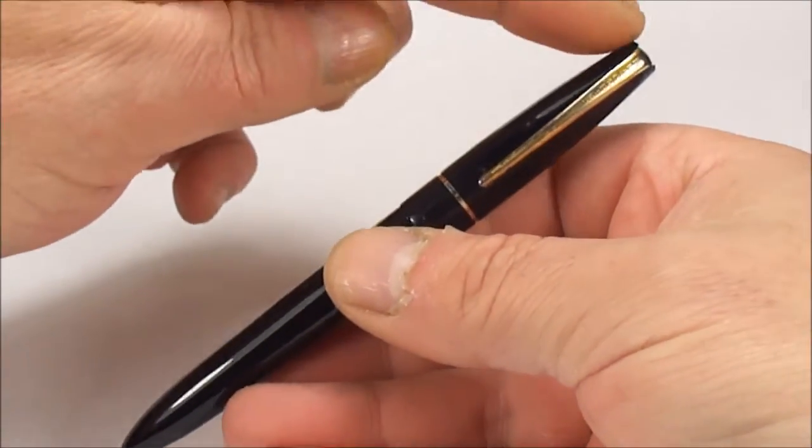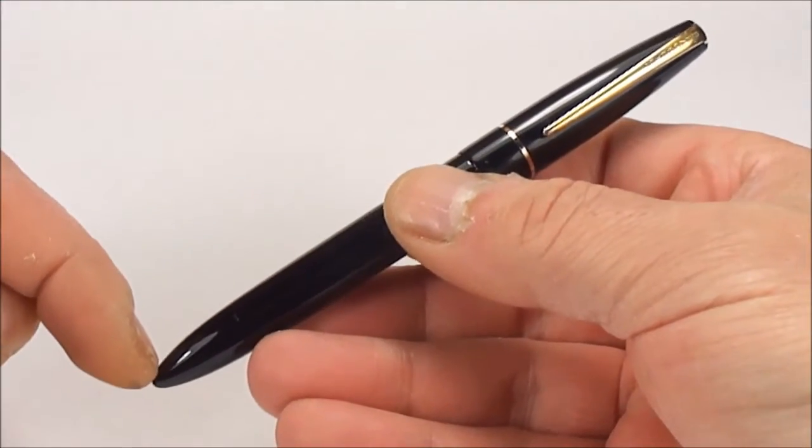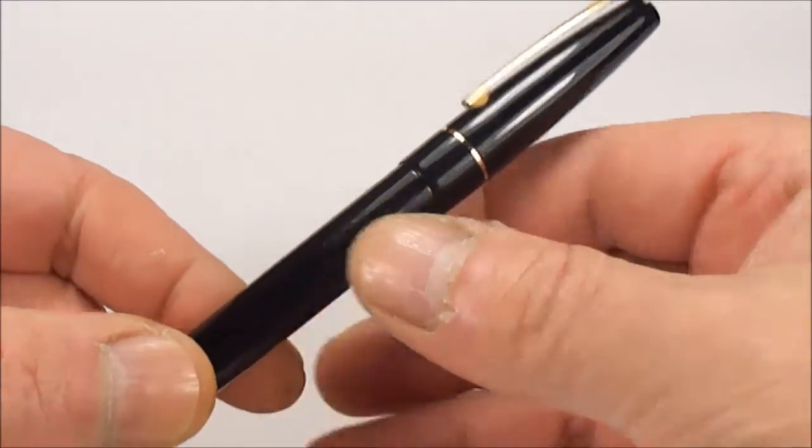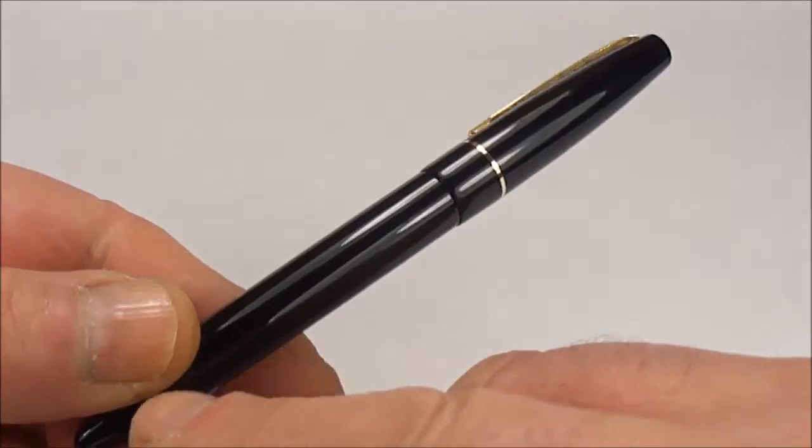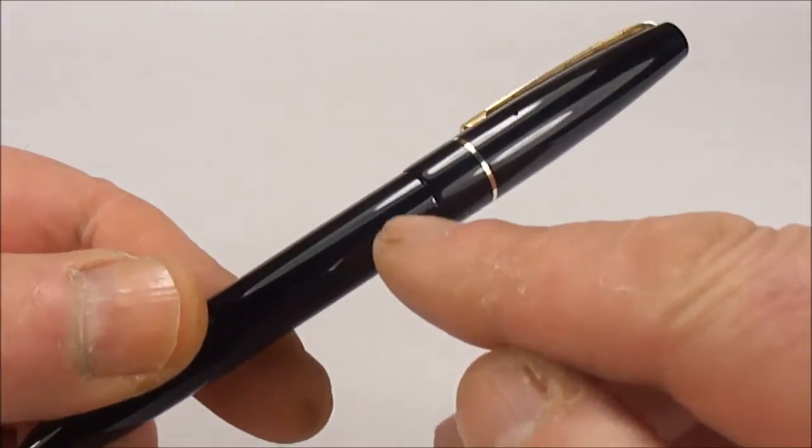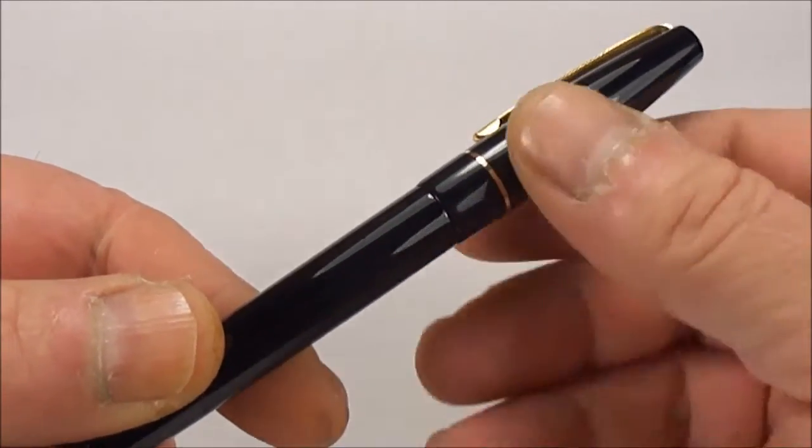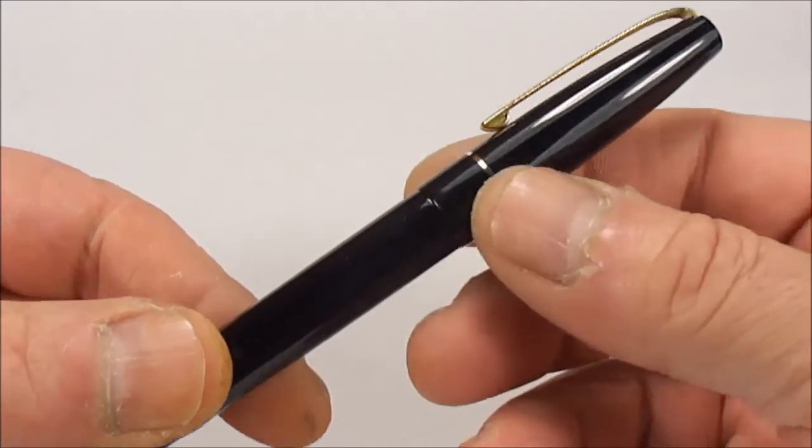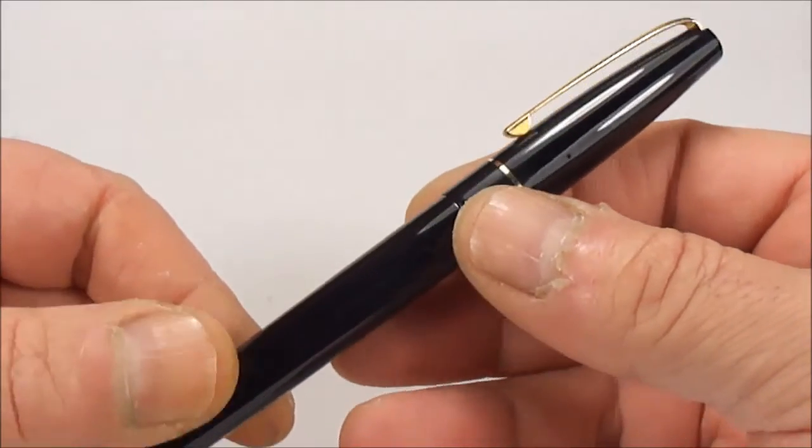Now the size of the pen from the top of the cap to the bottom is approximately 131 millimeters capped. It slightly tapers down to this torpedo end there, but around this particular section it's approximately about 11.5 millimeters in diameter.